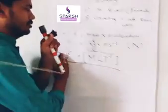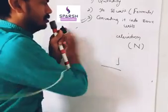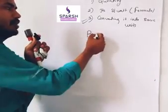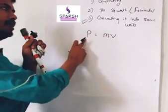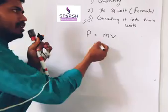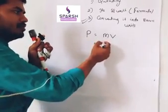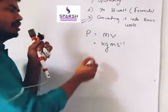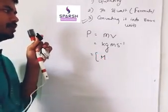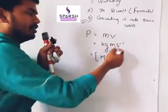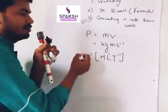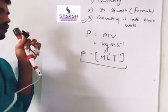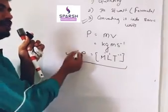Let us take another example: momentum. Momentum is represented by P and its formula is mass into velocity. First step is quantity, second step is its formula or SI unit. Mass is kg and velocity is meter per second. kg is written as M, meter as L, second as T to the power minus 1. This is the dimensional formula for linear momentum: M L T minus 1. Don't forget to enclose this formula in a square bracket — then it becomes a dimensional equation.